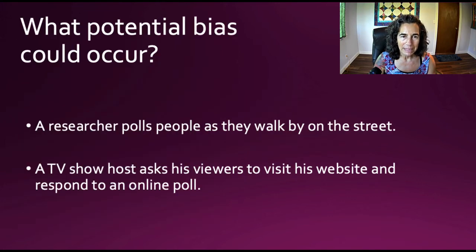All right. So here's some questions for you. What potential bias could occur? A researcher polls people as they walk by on the street. So think about that and think about why bias could occur and potentially what kind of bias. And then the second question, and we'll talk about this in class, is a TV show host asked his viewers to visit his website and respond to an online poll. Why might that be biased? Okay. So those are some thought experiments for you.